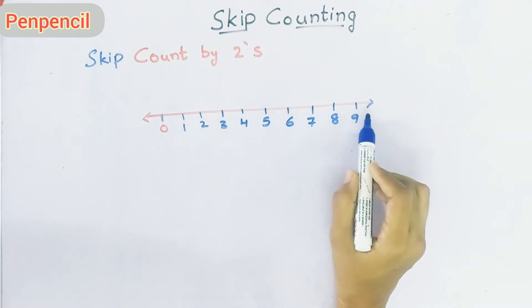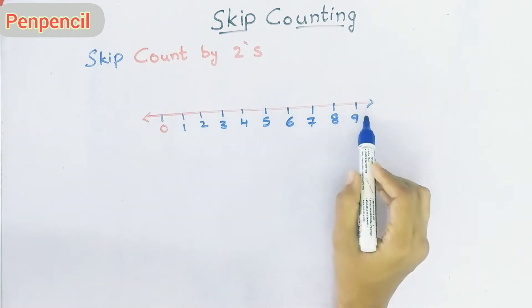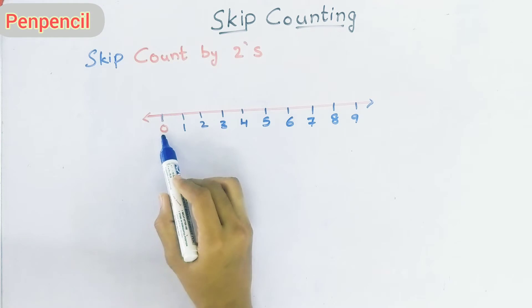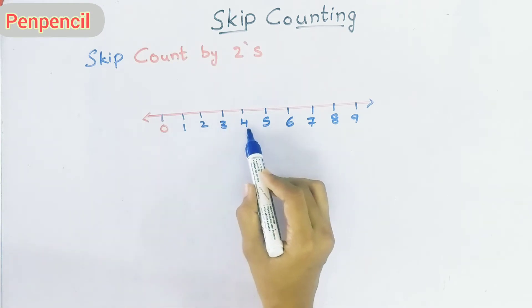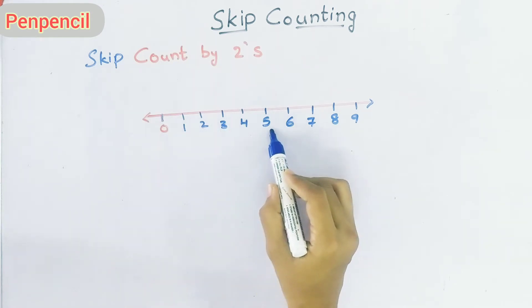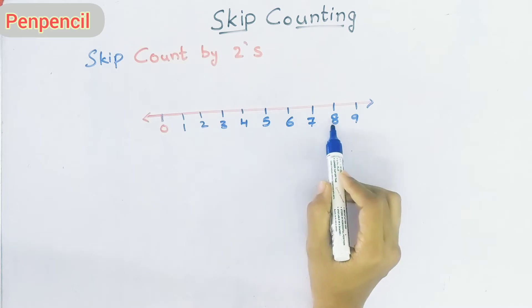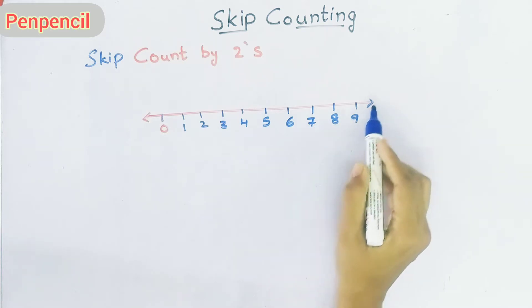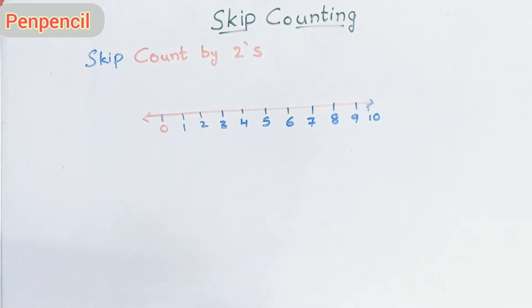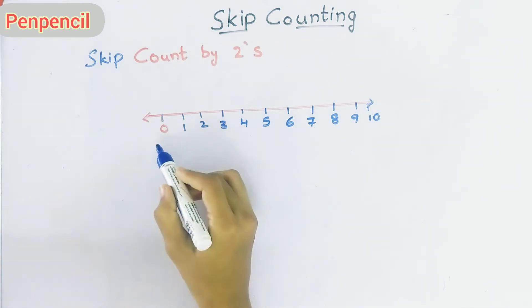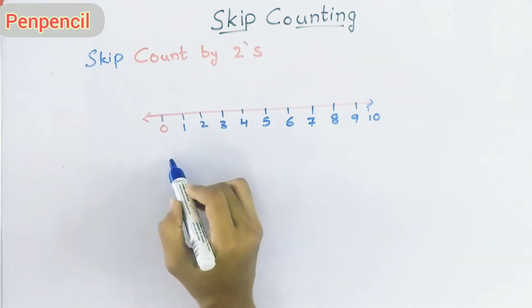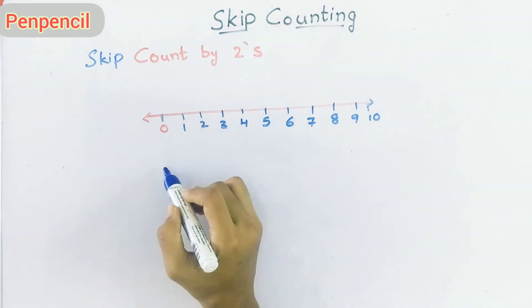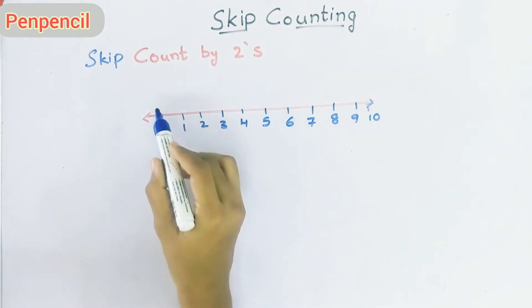Here I have given a number line and I have written numbers on it. The numbers are: 0, 1, 2, 3, 4, 5, 6, 7, 8, 9, 10.